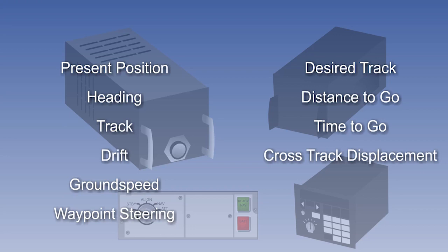The first is called cross-track displacement, and the second is track error angle. We'll explain these.